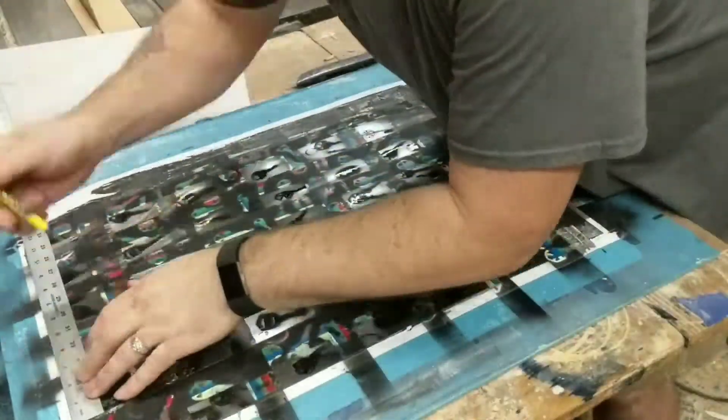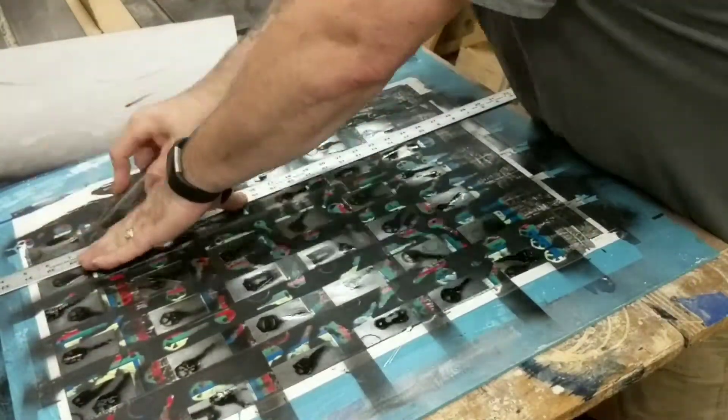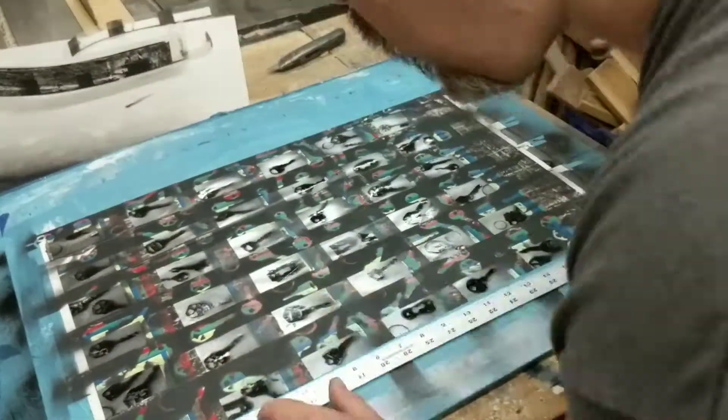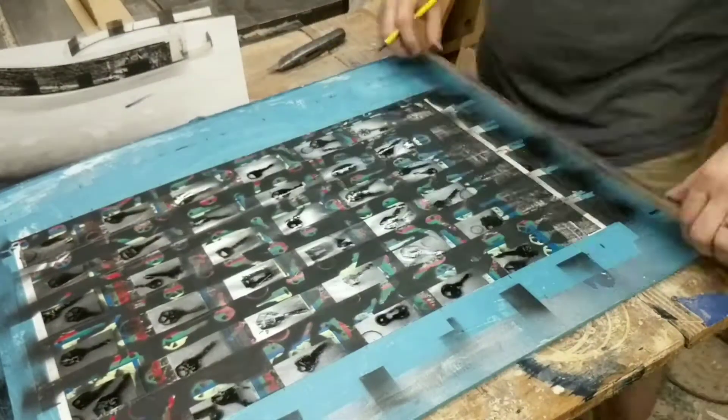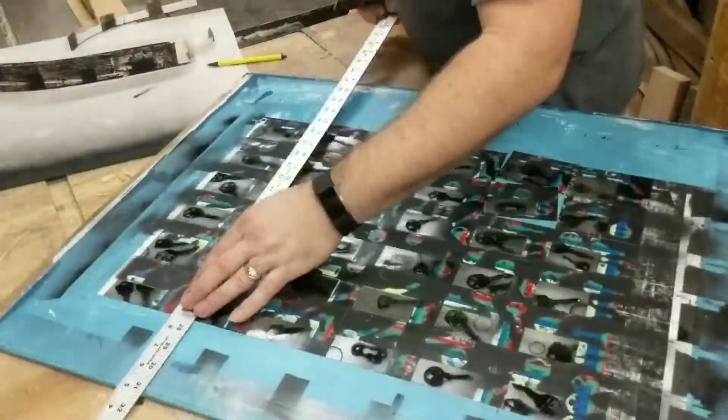So here I kind of thought I was done, and so I decided to cut it out and separate all of the trading cards. So I cut each one of them into sections. Each card is three and a half by two and a half.